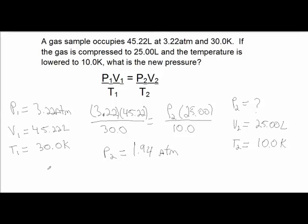So my condition 1 here is 3.22 atm, 45.2 liters, and 30.0 degrees Kelvin. Now, really handy is that they gave you the temperature in Kelvin. Condition 2, we're looking for our new pressure with these new volume and temperature conditions. Decreased volume and a decreased temperature.